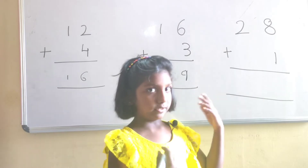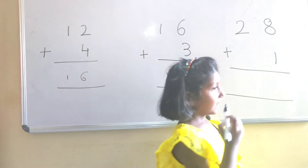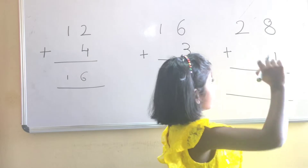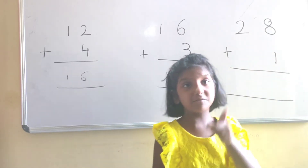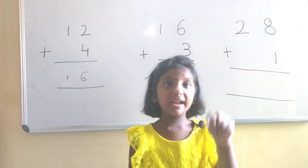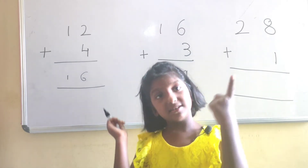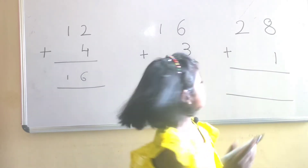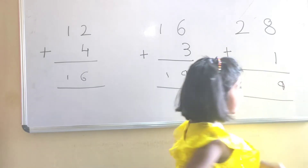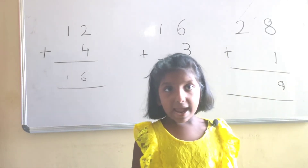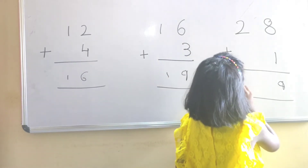Now let's go to the next number: 8, 2, 8, 1. 8 in mind, 1 in hand. 8, after 9. The answer is 9. Here there is no number to add, that's why I am writing 2.